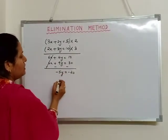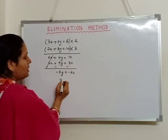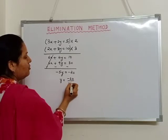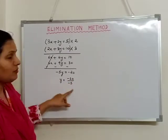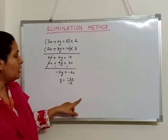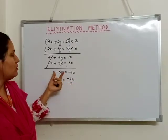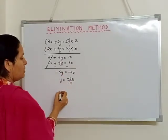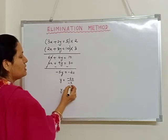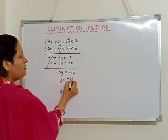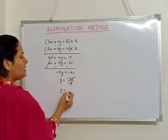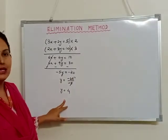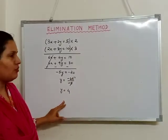Now after solving it, since I have to find out the value of y, it is minus 20 upon minus 5. We know that multiplication changes to division. After dividing both the numbers, 4 fives are 20, and minus minus gets cancelled. Therefore, I got the value of y equals to 4.